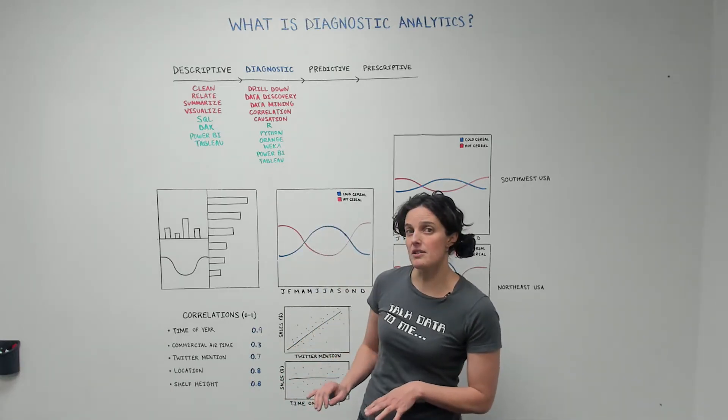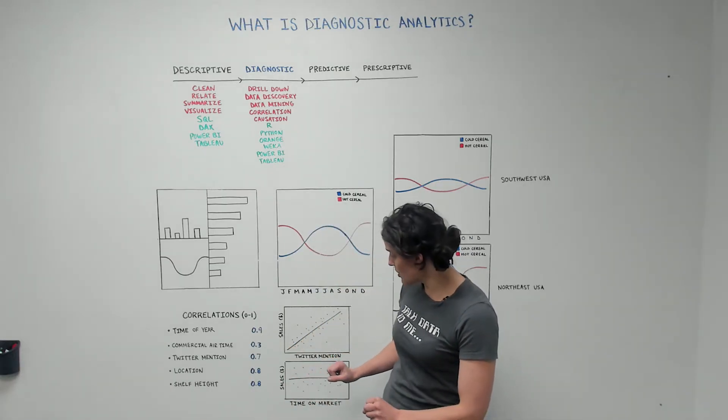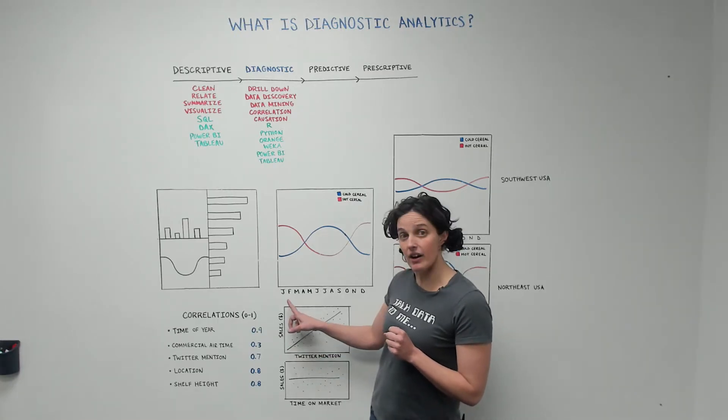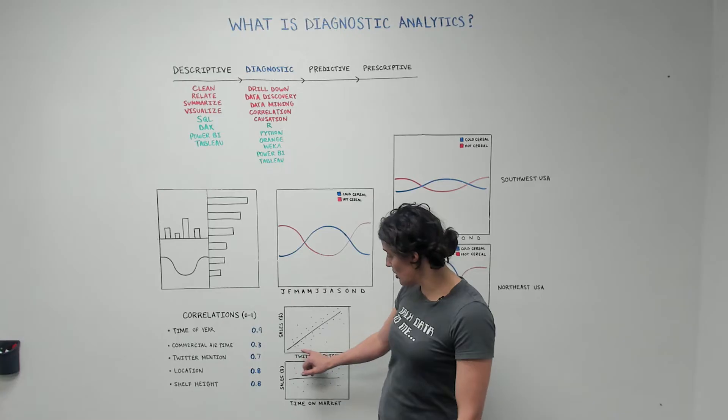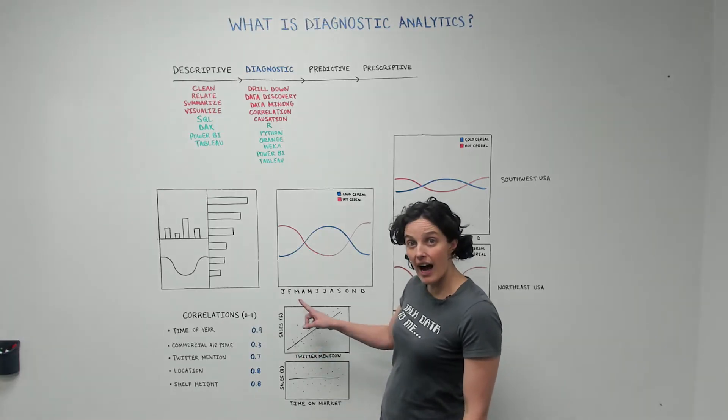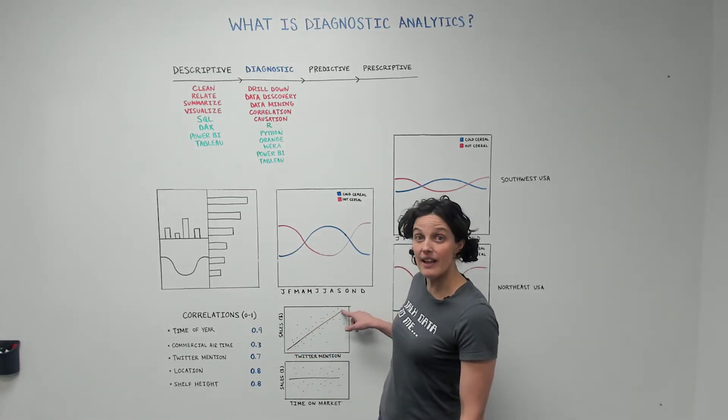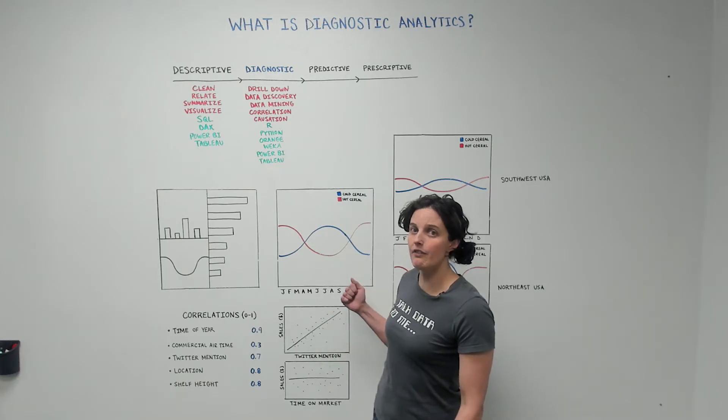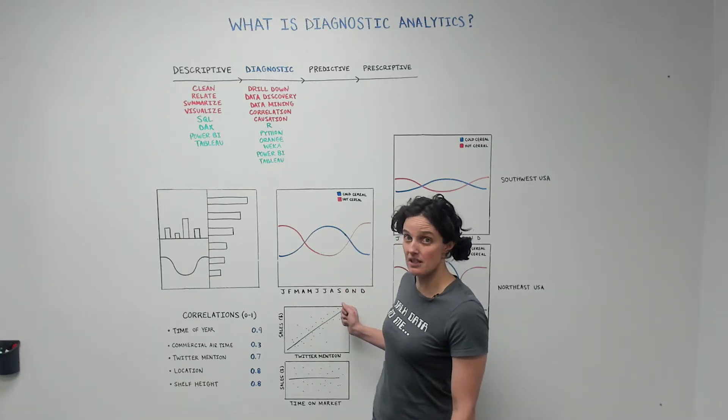So let's think about this graphically and visually. Here's an example: we have Twitter mentions and sales, and we can see that the more Twitter mentions you have, the higher the sales go, as you can see from this line here. And these dots out here, the distance away from these lines—the more clustered these dots are to this line, the more confident we are that this correlation is in fact true.